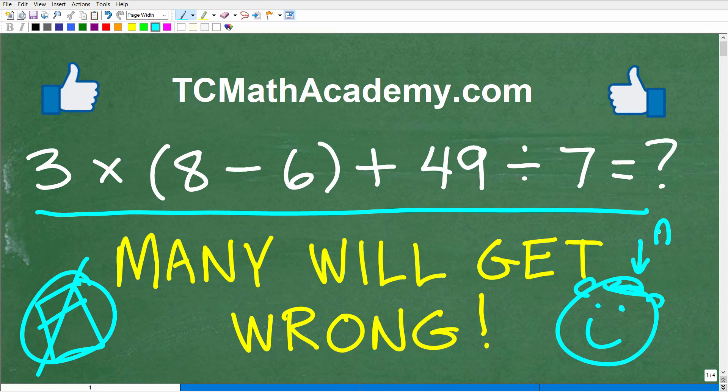Just use that supercomputer in between your ears. That's much better than any artificial intelligence. That's actual intelligence. But the problem seems pretty simple. However, a lot of you are going to get this wrong. And I'll explain why here in a second. But the problem is 3 times parentheses 8 minus 6 parentheses plus 49 divided by 7. What is this equal to?